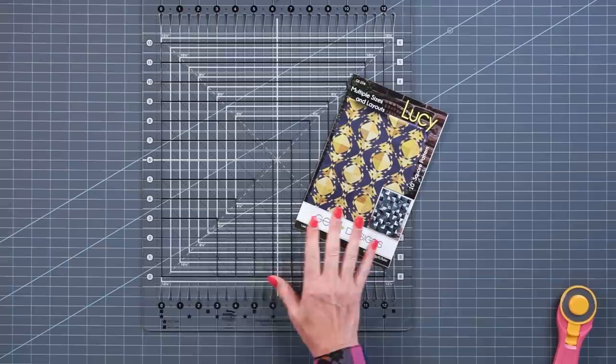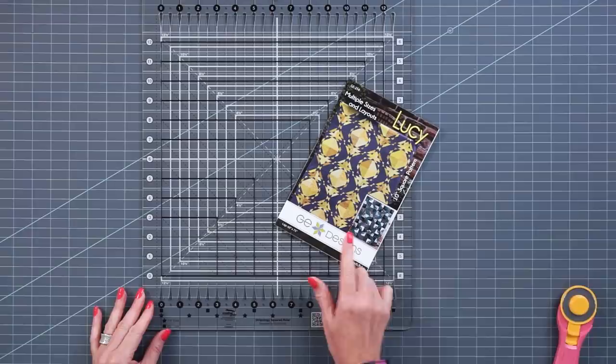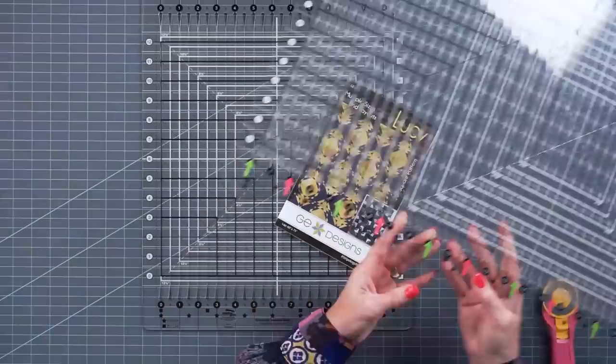So I have the pattern right here and I'm going to be using the topology squared ruler for this quilt because it uses 10 inch squares, but you could just as well use the XL ruler for the same purpose.